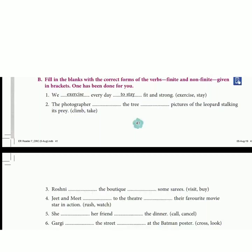Here is part B, page 41. Fill in the blanks with the correct forms of verbs, finite and non-finite, given in brackets. One has been done for you. In this question, we need to fill the finite verb in the first bracket and the non-finite verb, the second verb given in the bracket, in the second blank.